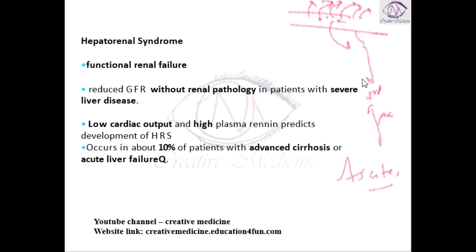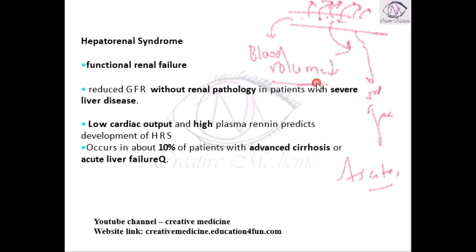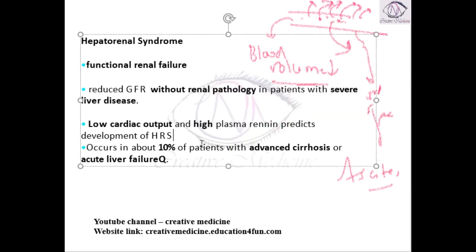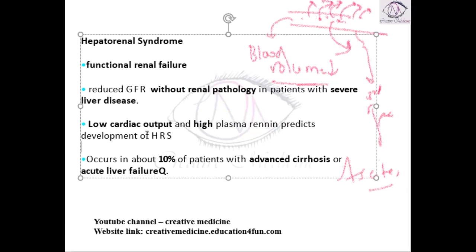Whenever there is ascites, the blood volume will decrease. The volume is going and occupying the third spaces like ascites and pleural effusion. Because of this decreased blood volume, there will be low cardiac output, and because of this there is high renal plasma renin. This is one of the predictors for development of hepatorenal syndrome.